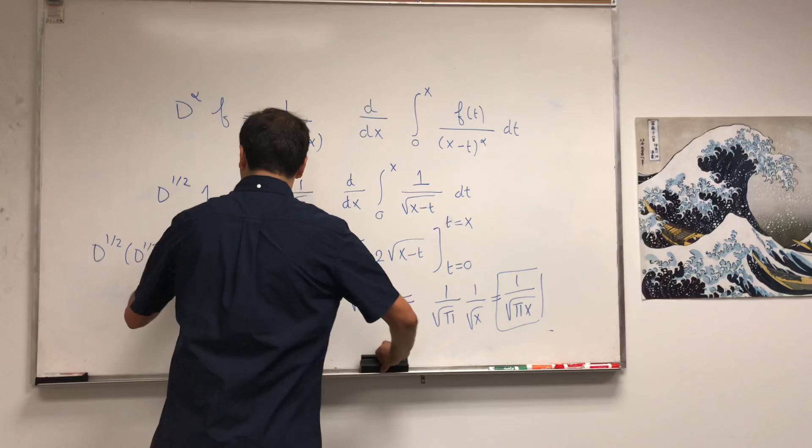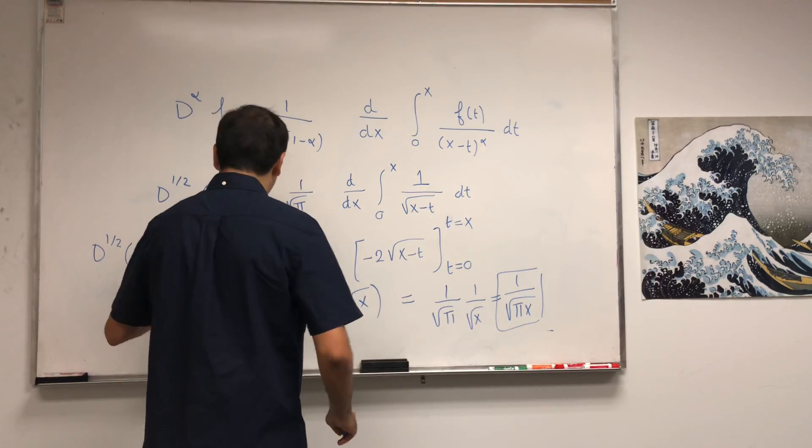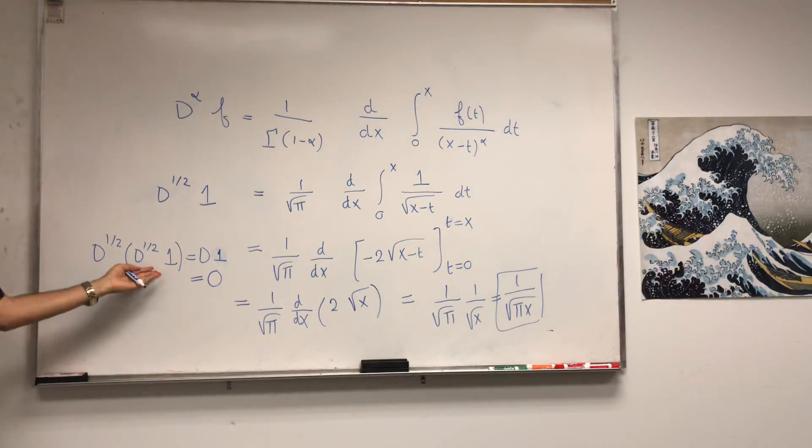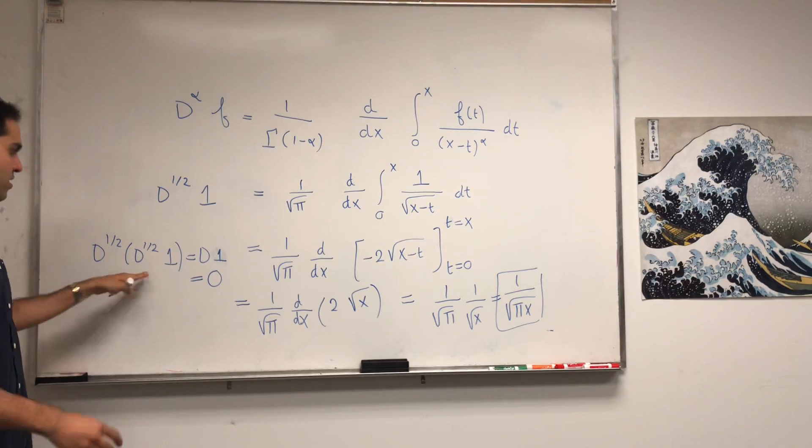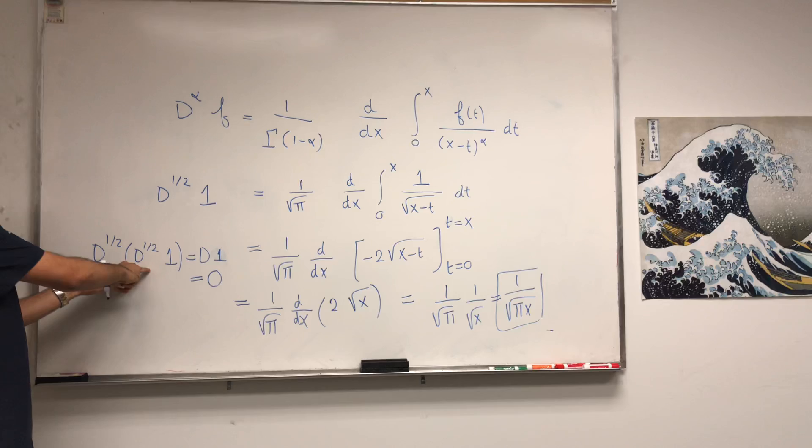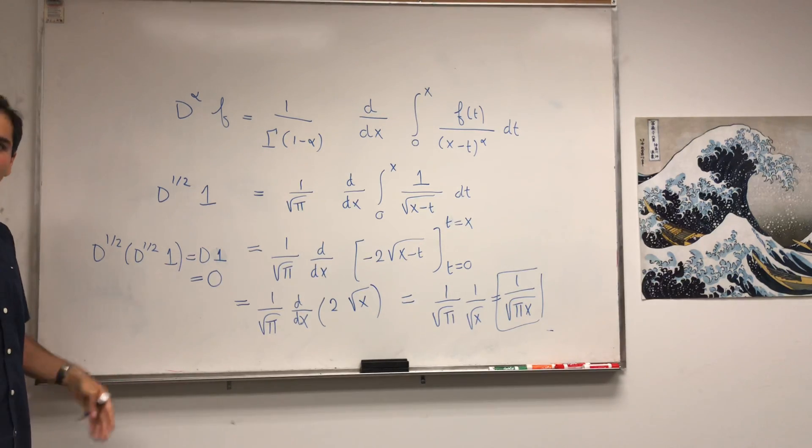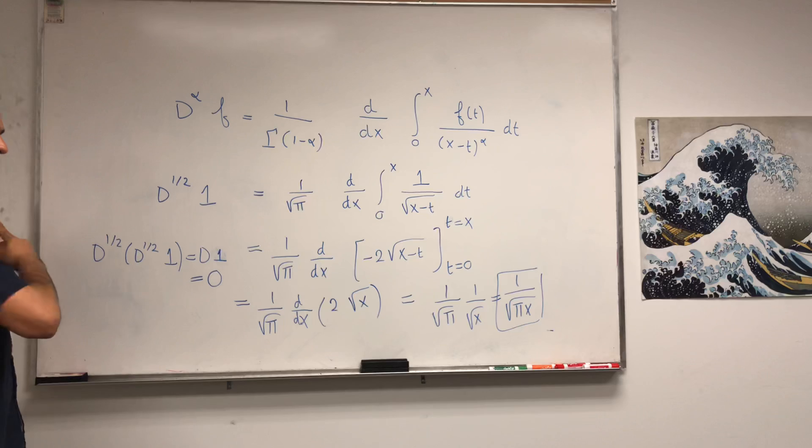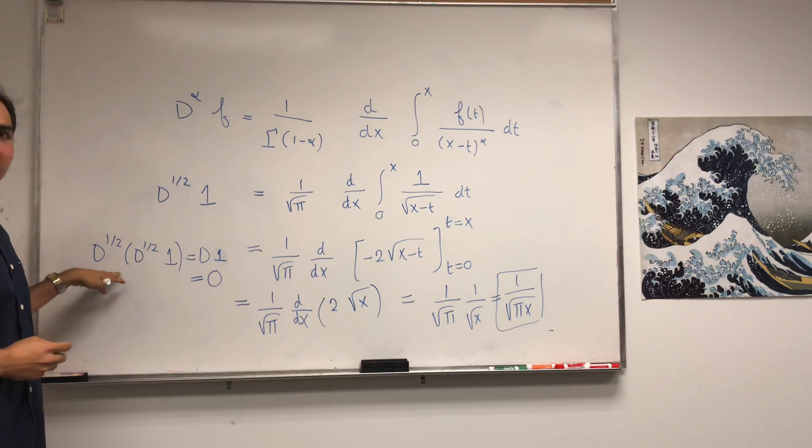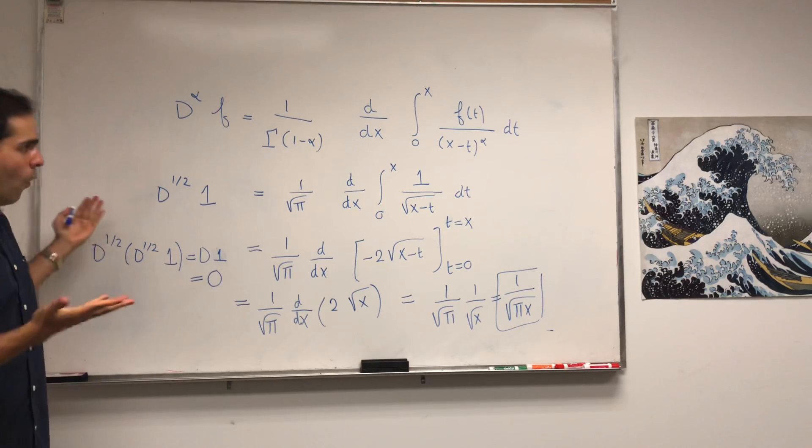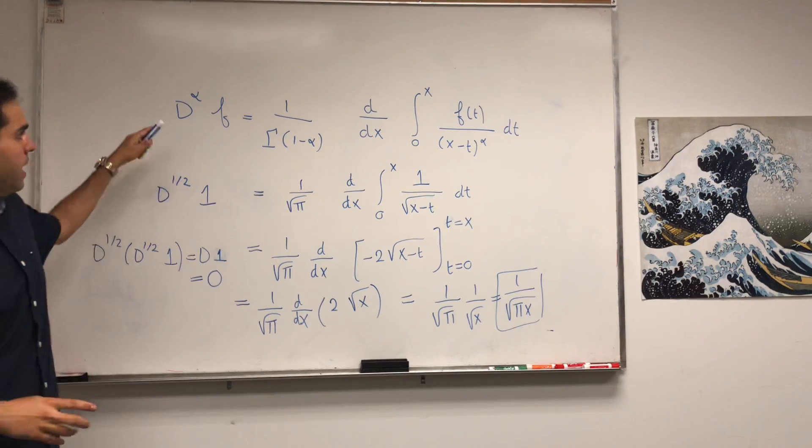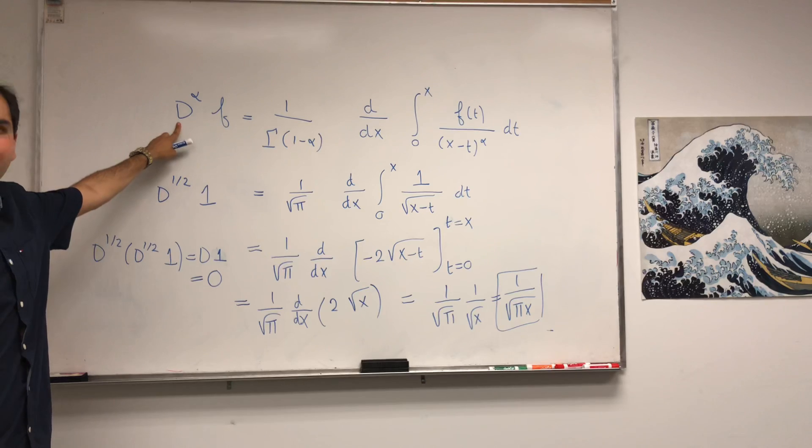If you take the definition that the half derivative of the half derivative gives you the derivative, d^1 which is zero, then the half derivative of 1 is not 1 over square root of pi x, because if you do that you get something like a constant over x. So using this definition, the half derivative of 1 should be zero.